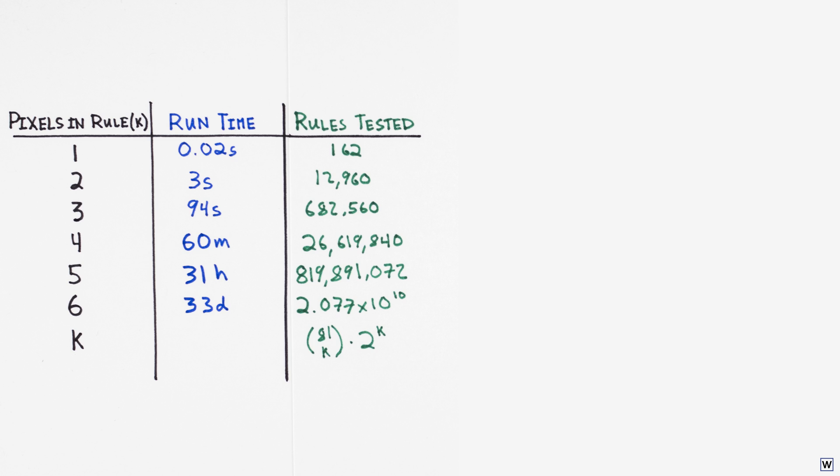Let's be a bit more quantitative about the time complexity of our solution to finding the best k pixel rule. Earlier, we figured out that we needed to test 2 to the k times 81 choose k rules to find the best k of our 81 total pixels. Let's be a bit more general here and call the size of our examples n. So in our case n equals 81.